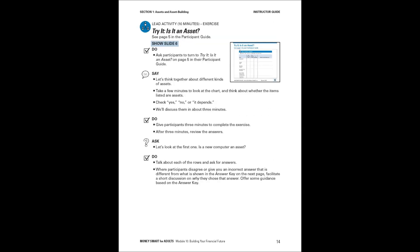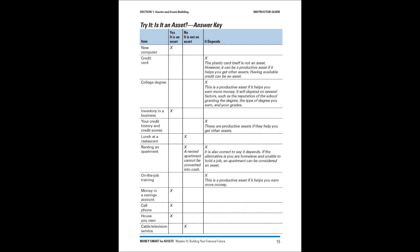Slide six shows the first try-it activity in the module, titled 'Is it an asset?' Participants will look at a list, think about what each item is, and answer yes, no, or it depends. Give them about three minutes to go through the entire list, then review answers by going through the first one — asking: is a new computer an asset? Then go through each row and ask for answers. If someone gives an incorrect answer, facilitate a short discussion on why they chose that answer and offer guidance based on the answer key.